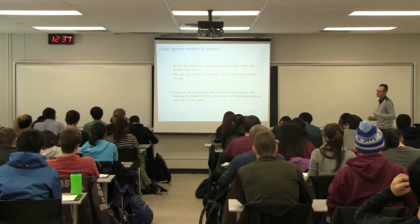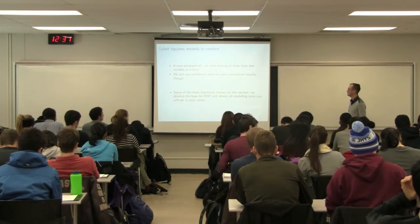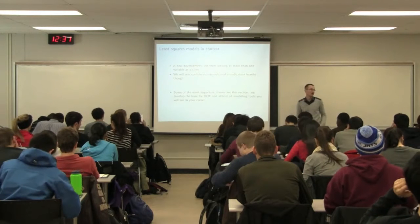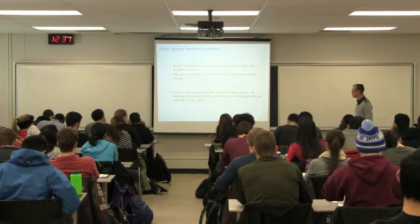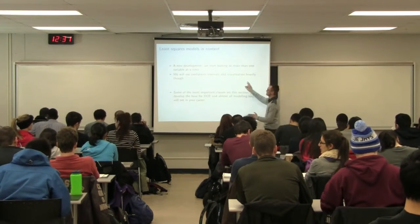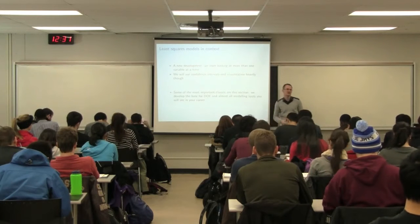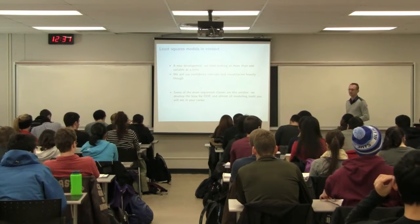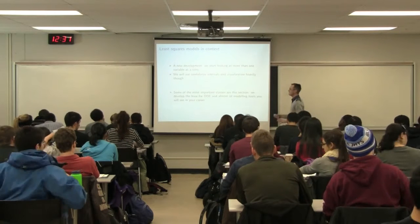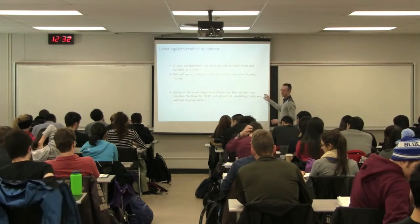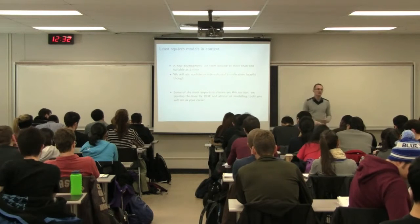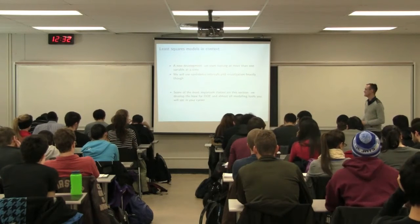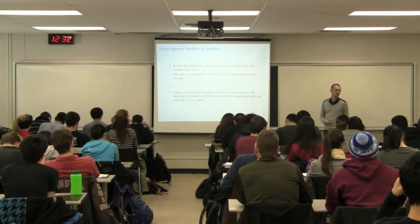This least squares section is going to build on the previous univariate section we've considered. We're going to use data visualization quite strongly as well as a preliminary inspection of our dataset. This section is here to build on those two, and we're also going to use it heavily in the next section on design of experiments — your experimental model will be analyzed using a least squares model.